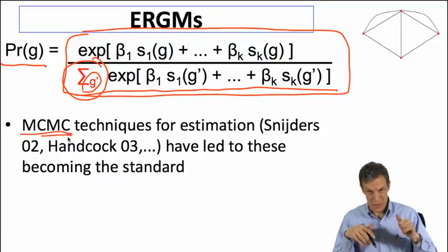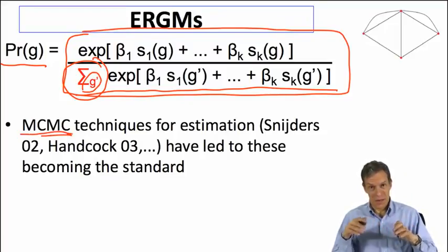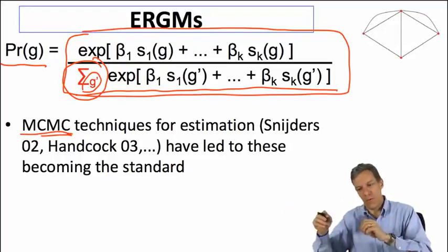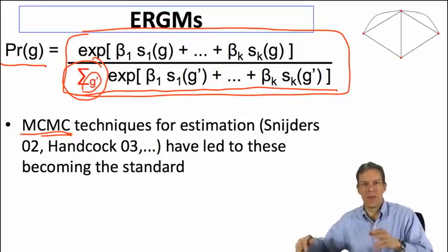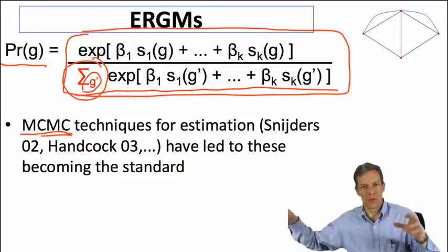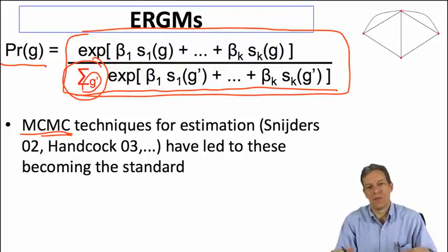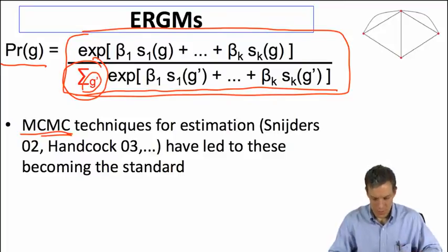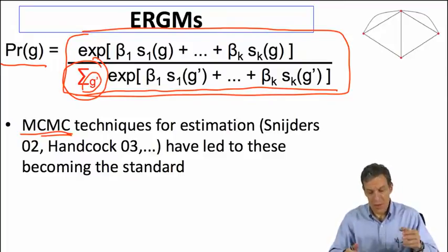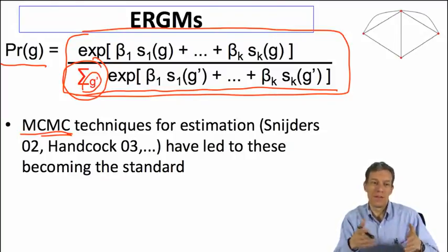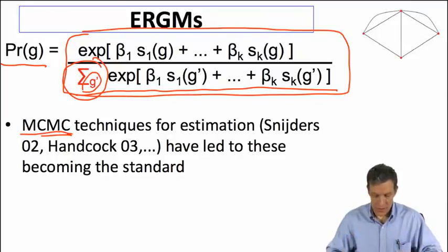We'll end up using what's known as Markov chain Monte Carlo methods where we randomly go from network to network, evaluate this, and we'll do that over some random search through the set of possible networks. Hopefully that search ends up being representative of the denominator and gives us a rough estimate of what that denominator would be. Techniques by Tom Snijders, Mark Hancock, and so forth have been very important in making this work and have led to these kinds of analyses becoming a standard.